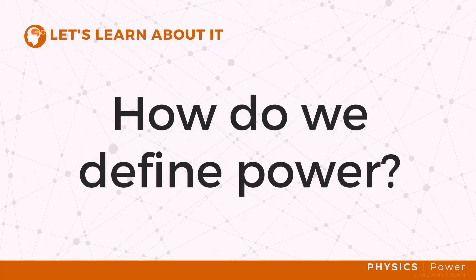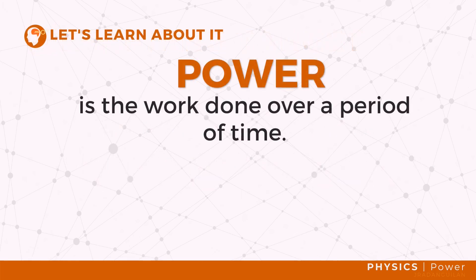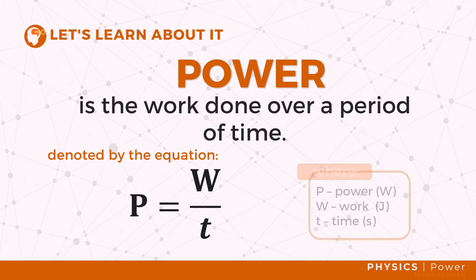Power is the amount of work applied on an object per unit time. It is the rate of doing work. This can be expressed as P equals W over T, where P is the power, W is the work done on an object, and T is the time it takes to do the work.